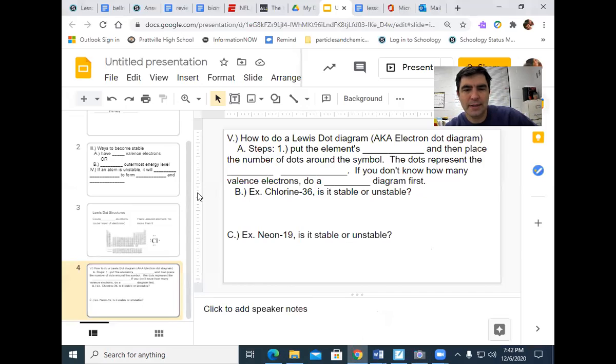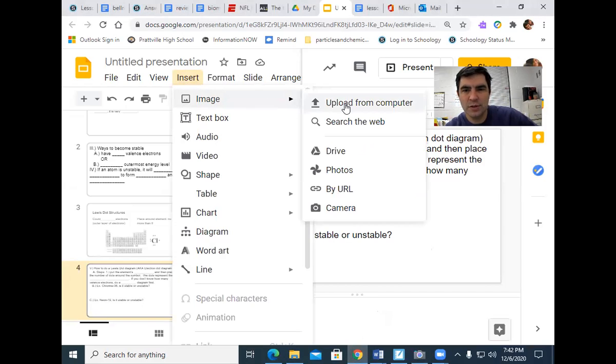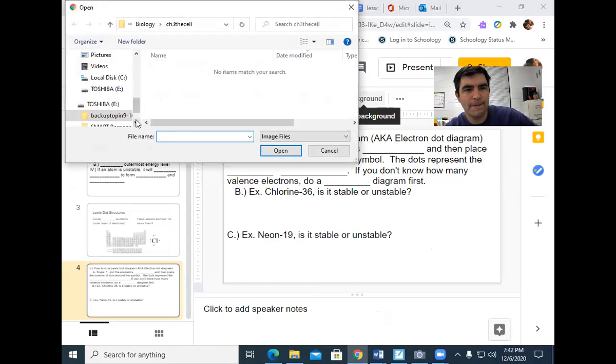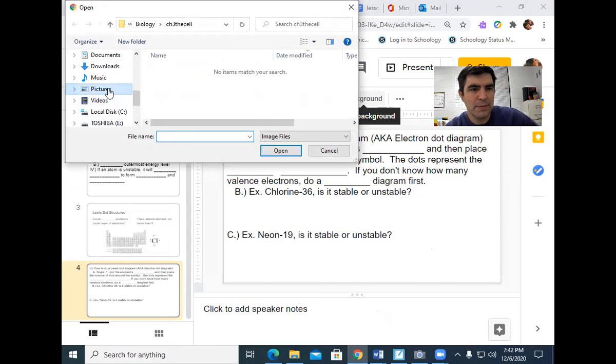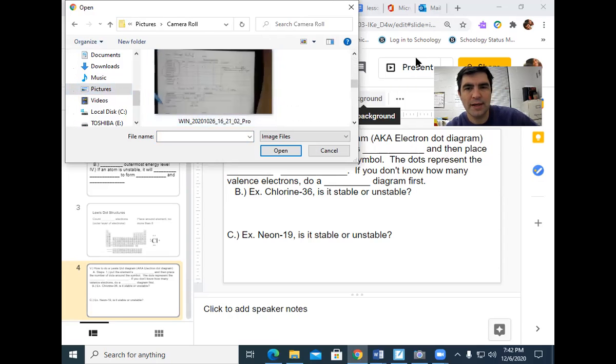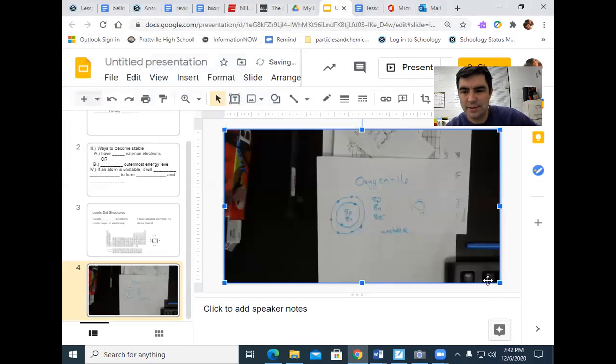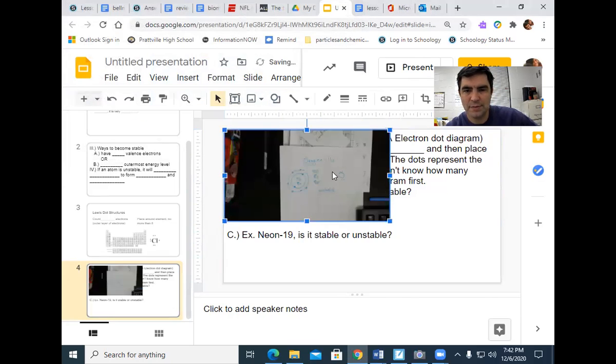I'm going to go back here. I'm going to go to insert image. I'm going to upload from my device. I'm going to go to my pictures, to my camera roll. It's the last image I have. There it is, it's inserted. And then we'll make it smaller.